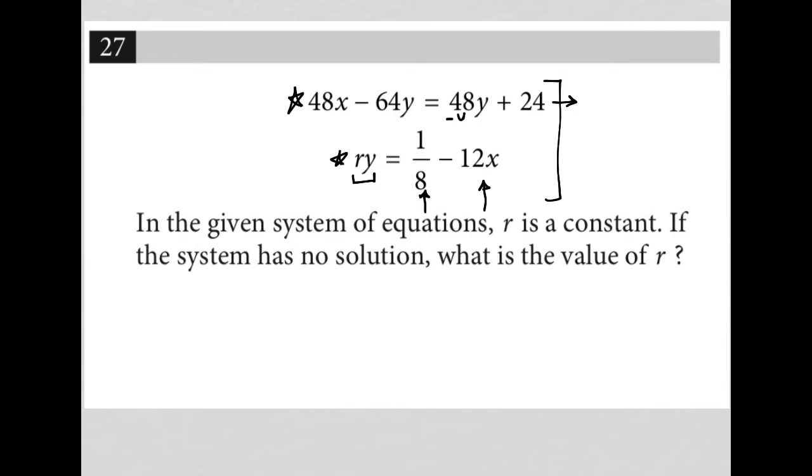I'm going to subtract 48y from both sides so that my y values are on the left, and then subtract 48x from both sides so that my x value goes to the right. In the first equation, my x's are gone on the left-hand side. Negative 64 minus 48 is negative 112, so this becomes negative 112y, and the 48y and negative 48y cancel out.